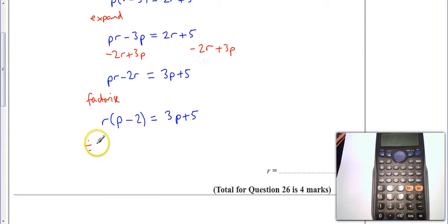I'm going to divide both sides by p minus 2. Now you don't have to write down what I've done in red, I've just put it in there to help you out. That is going to be r now. The numerator makes 3p plus 5 and on the bottom I've got p minus 2. So r is equal to 3p plus 5 divided by p minus 2 and I'm done.